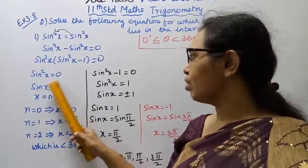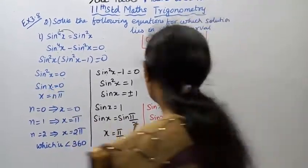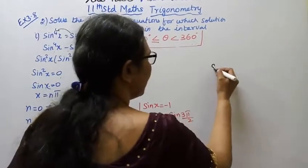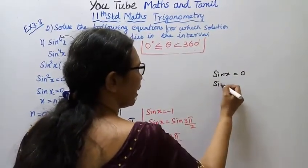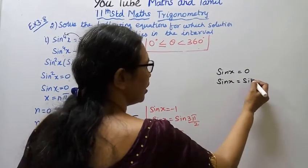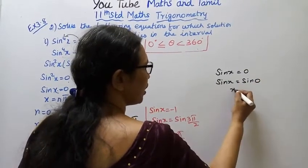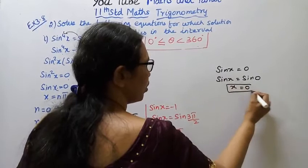First, sin²x = 0, so sin x = 0. sin x = sin 0, then x = 0.